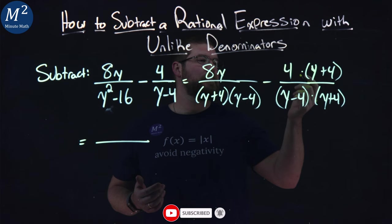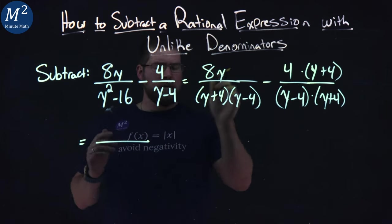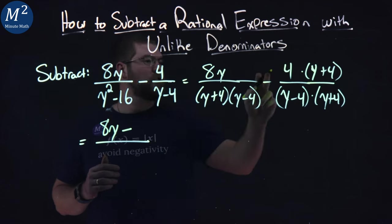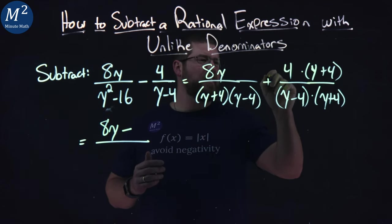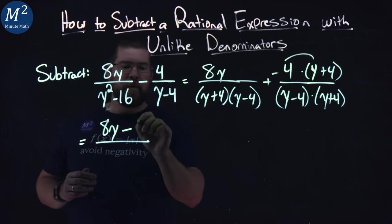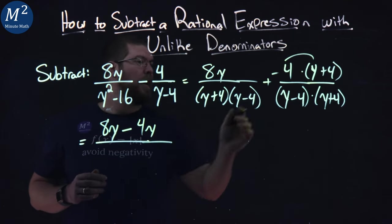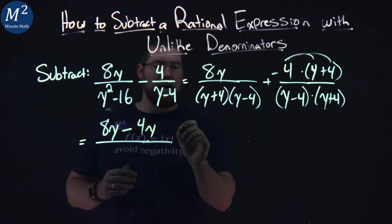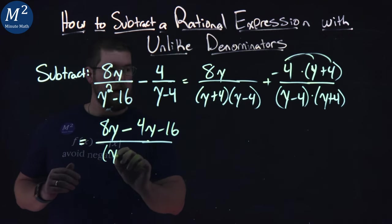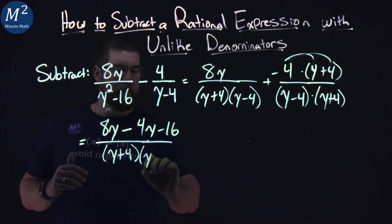Keep 8y by itself first: 8y minus here. We're going to distribute that minus - if you want, think of it as minus 4, makes it easier. Negative 4 times y is minus 4y, and negative 4 times 4 is minus 16. Denominator: y plus 4 and y minus 4.